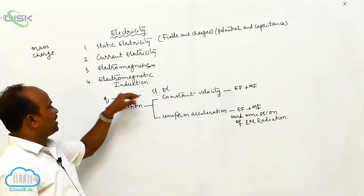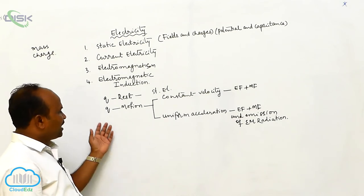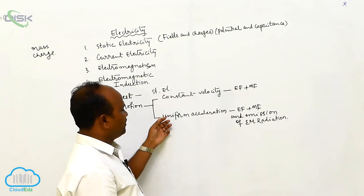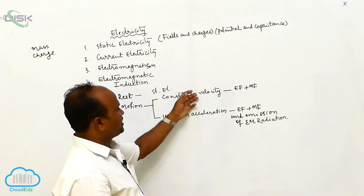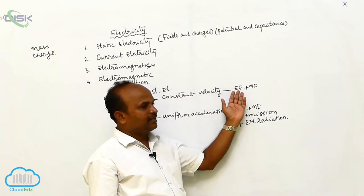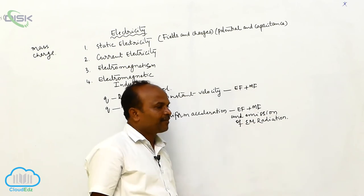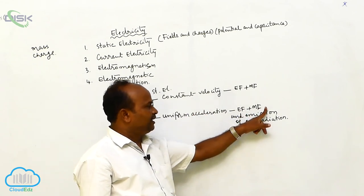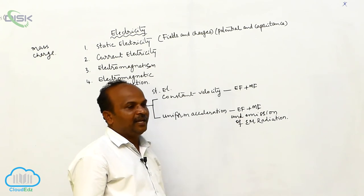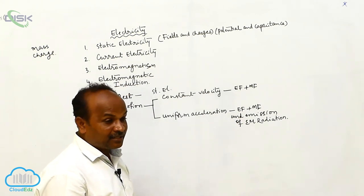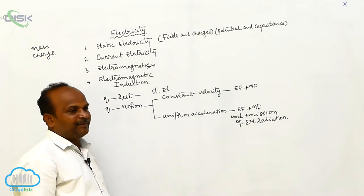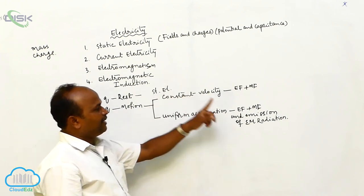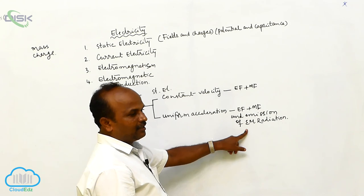The behavior of charge is discussed in static electricity when the charge is at rest. When the charge is under motion with constant velocity, there is an electric field and magnetic field. If the charge has uniform acceleration, there is an electric field, a magnetic field, and emission of electromagnetic radiation. This is the fundamental concept in classical mechanics: an accelerated charged particle will emit electromagnetic radiation.